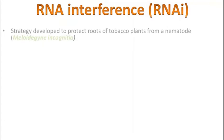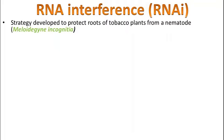RNAi, or RNA interference — what is this? This is a new, different technology, unlike BT cotton. It is a strategy developed to protect roots of tobacco plants from nematodes. The nematode is a roundworm which can destroy tobacco plants. The nematode's scientific name is Meloidogyne incognita.